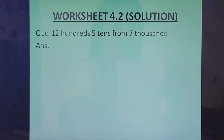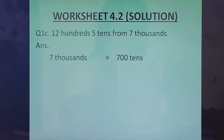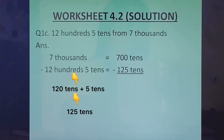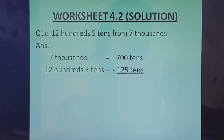Part C: 12 hundreds, 5 tens from 7 thousands. We take 7,000 and convert it into tens. From thousands to hundreds you add one zero; from hundreds to tens you add another zero. So 7,000 becomes 700 tens. 12 hundreds, 5 tens becomes 125 tens — 12 hundreds is 120 tens, and 120 tens plus 5 tens is 125 tens. So we do 700 minus 125, which is 575. The answer is 575 tens.